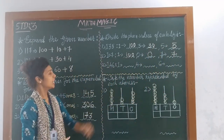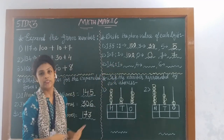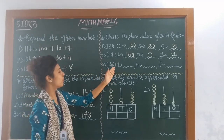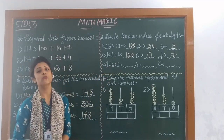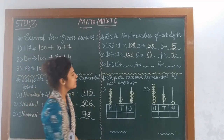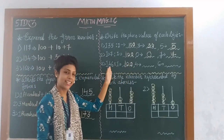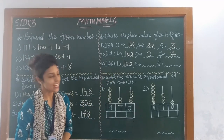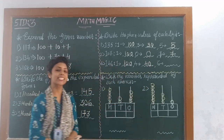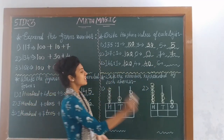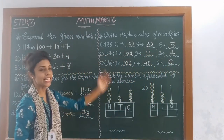Number 3: 146. 1 is at 100's place, so 1 multiplied by 100 is 100. 4 is at 10's place, so 4 multiplied by 10 is 40. And 6 is at 1's place, so 6 ones are 6. So these are the place values.